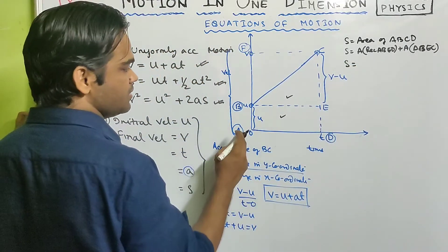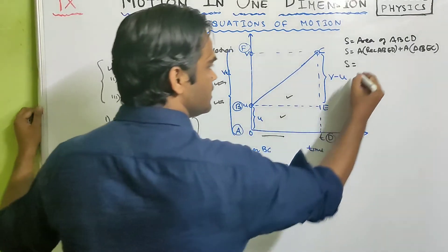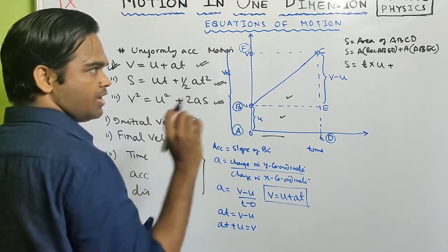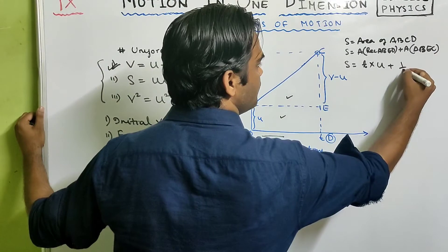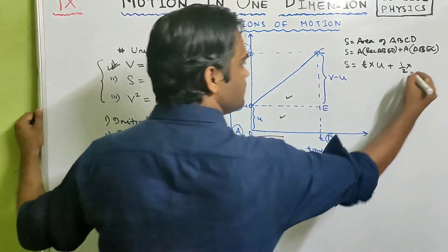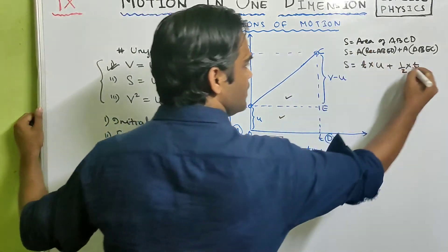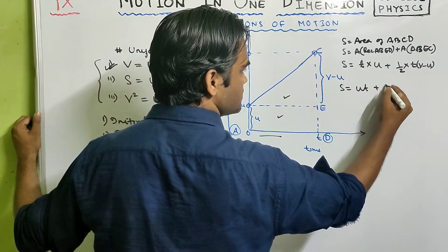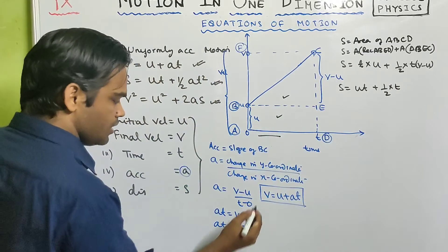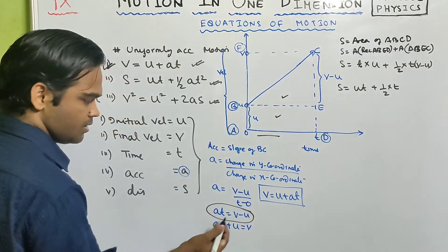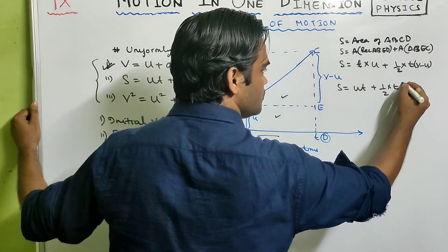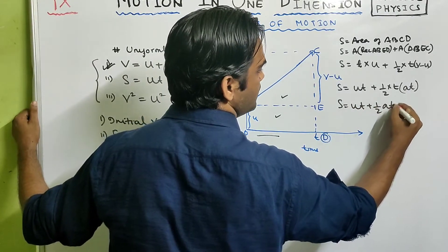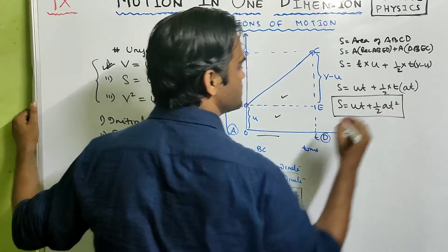s equals area of rectangle ABED, which is length t times breadth u, plus area of triangle BEC, which is half times base t times height (v minus u). So s equals ut plus half times t times (v minus u). Since v minus u equals at, substituting gives s equals ut plus half at squared. That is the second equation of motion.